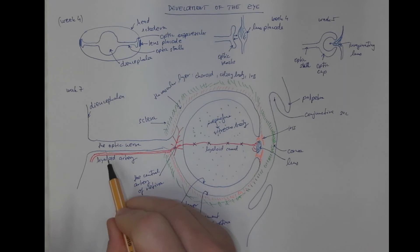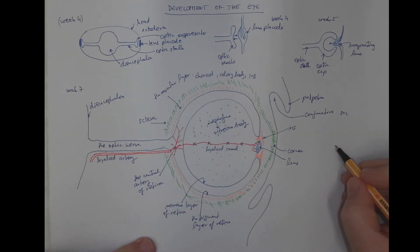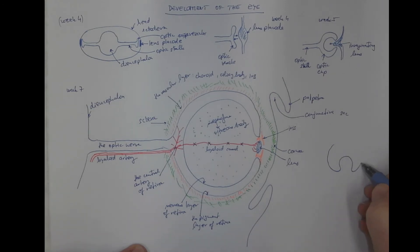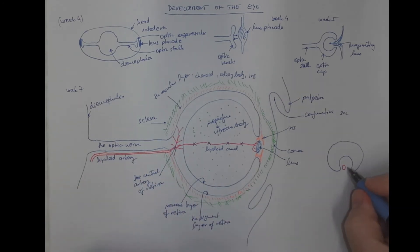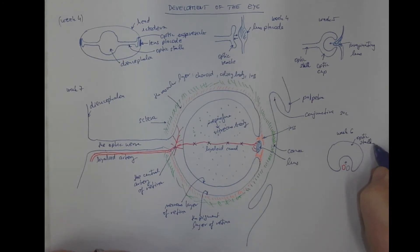I will go back to this relation between optic nerve and the hyaloid artery. The optic nerve makes this kind of fissure into which the hyaloid artery with the accompanying vein are moving. So in week six, the optic stalk is kind of embracing these hyaloid blood vessels.